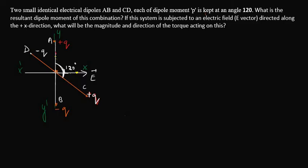In this given question you can see there are two given dipoles. The first dipole is AB and the other one is DC. Let us mark the direction of the dipole moment.